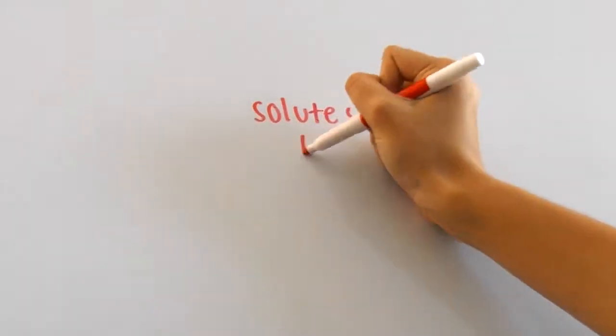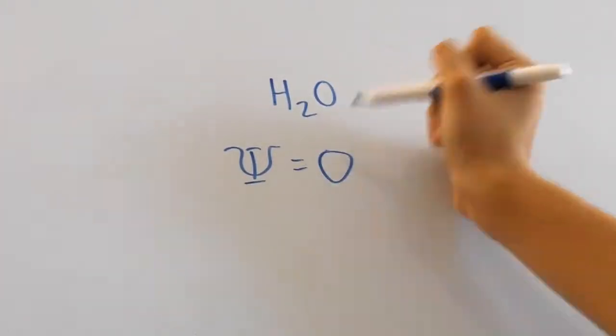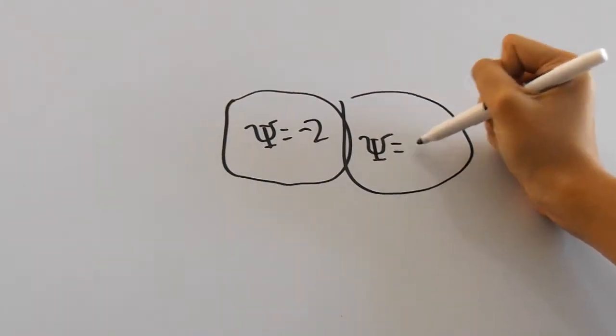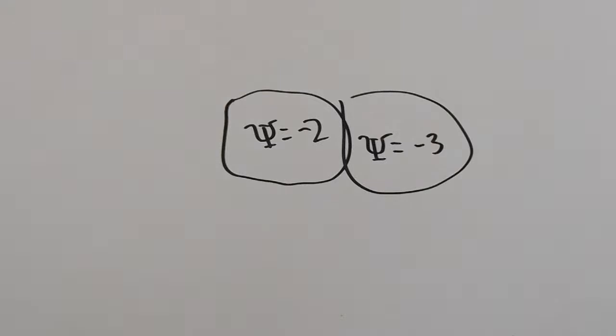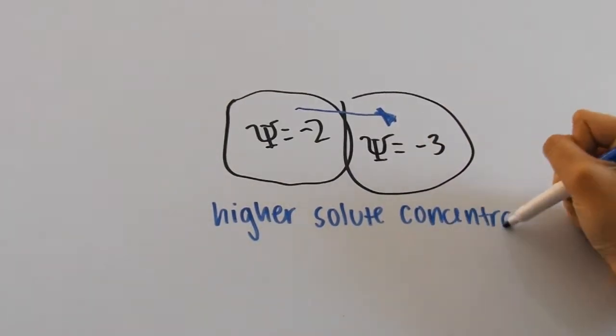Solute concentration and pressure can influence water potential. Pure water has a water potential of zero, so let's say that one cell has a water potential of negative 2 bars, and the cell next to it has a water potential of negative 3 bars. That means the cell with negative 3 bars has either a higher solute concentration, lower pressure, or both.